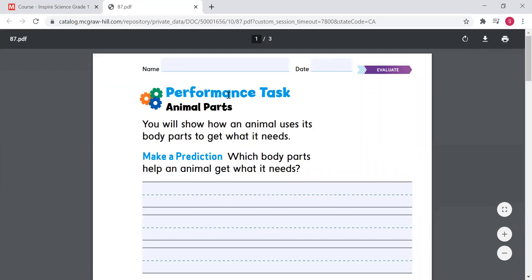All right, performance task. So animal parts. You will show how an animal uses its body parts to get what it needs. Make a prediction. Which body parts help an animal get what it needs?